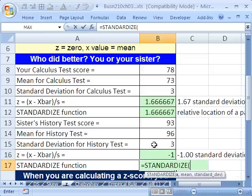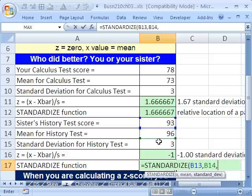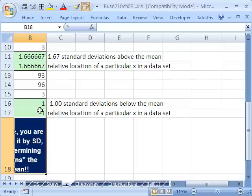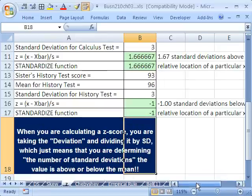And similarly, we could use our standardized function. We take our x, comma, our mean, comma, our standard deviation. We get minus 1 in both cases. So minus 1, standard deviation is below the mean. Minus 1 means relative location of a particular x in a data set. Notice, once we have this relative location, now we can compare. You did much better than your sister.